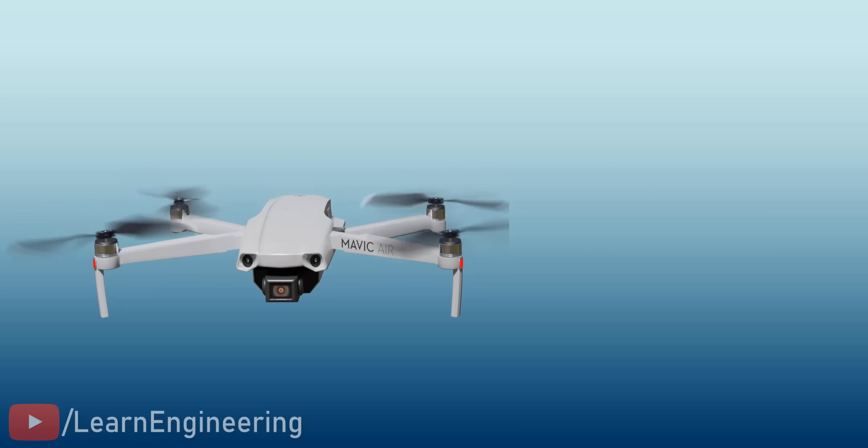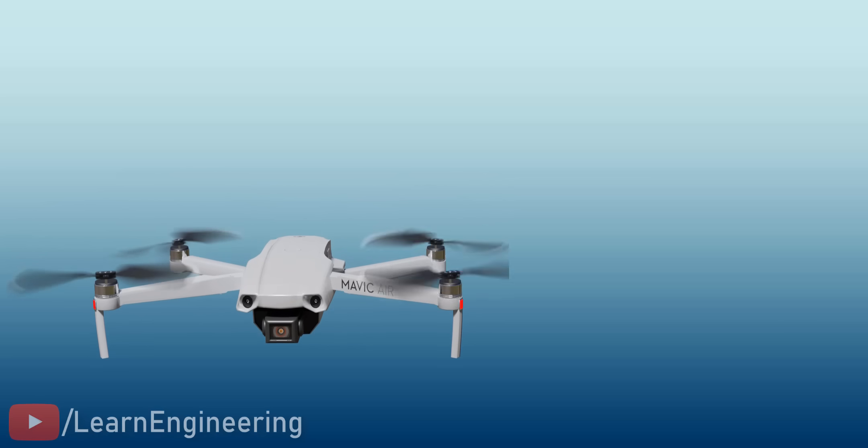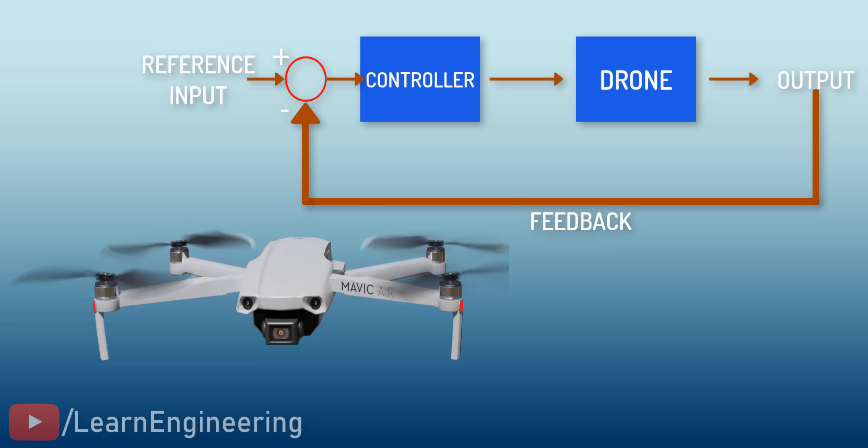Advanced control algorithms are incorporated into such systems to increase accuracy and efficiency. In this drone example, we have seen that the feedback information controls the drone's motion. This type of system is called a closed-loop control system.